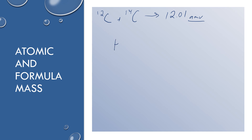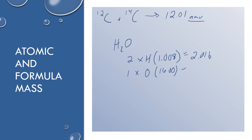Let's say I wanted to find the mass of H₂O. I would do 2 times the hydrogen relative atomic mass, which is 1.008, and then 1 times the oxygen relative mass, which is 16. That gives 2.016 plus 16, and you add them together to get the overall amu — that is your relative formula mass for water.